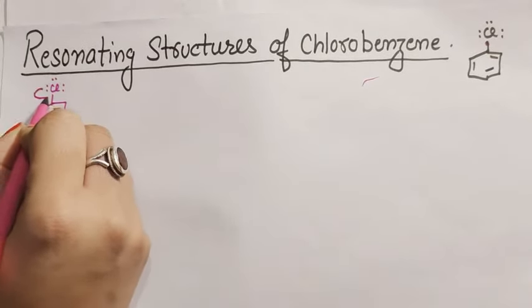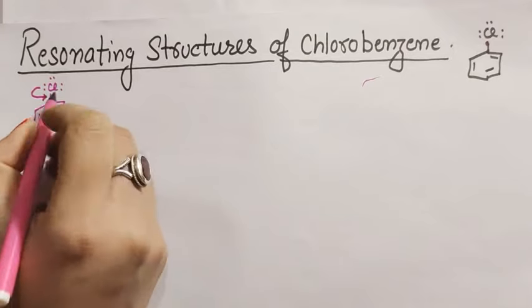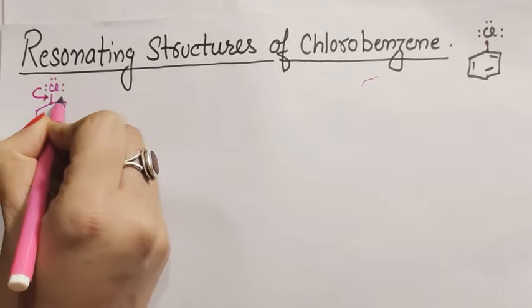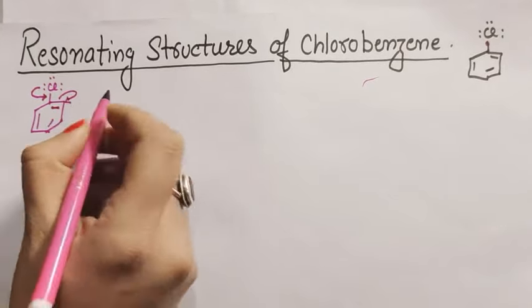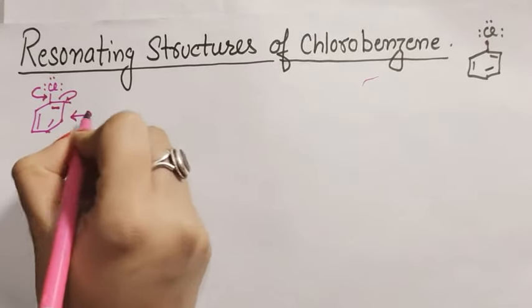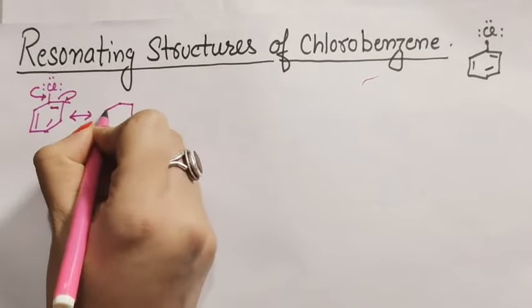The lone pair will become a bond, and the electrons will become a bond. So firstly, here we have a bond from the lone pair. So we have the resonating structures, which we have to denote as a double-headed arrow.